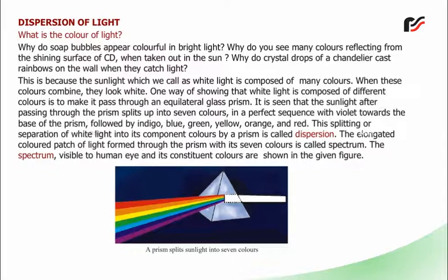It is seen that the sunlight, after passing through the prism, splits up into seven colors in a perfect sequence with violet towards the base of the prism. This is called dispersion. The elongated colored patch of light formed through the prism with its seven colors is called the spectrum. The spectrum visible to the human eye and its constituent colors are shown in the given figure.